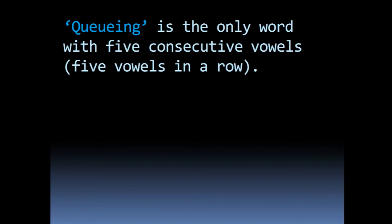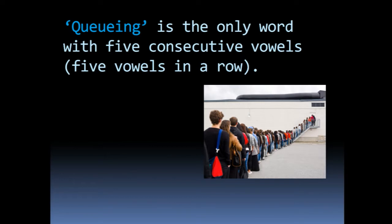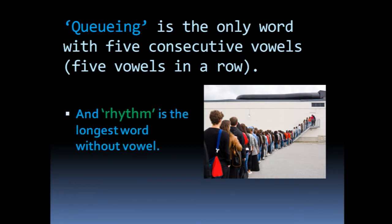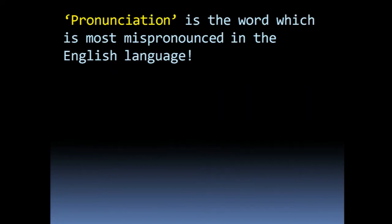'Rhythm' is the longest word without any vowels. On the other hand, 'rhythm' is also noted as the longest word without a vowel. The next fact is about pronunciation — the word 'pronunciation' is the most commonly mispronounced word in English; people often say 'pronounciation' instead of 'pronunciation'.